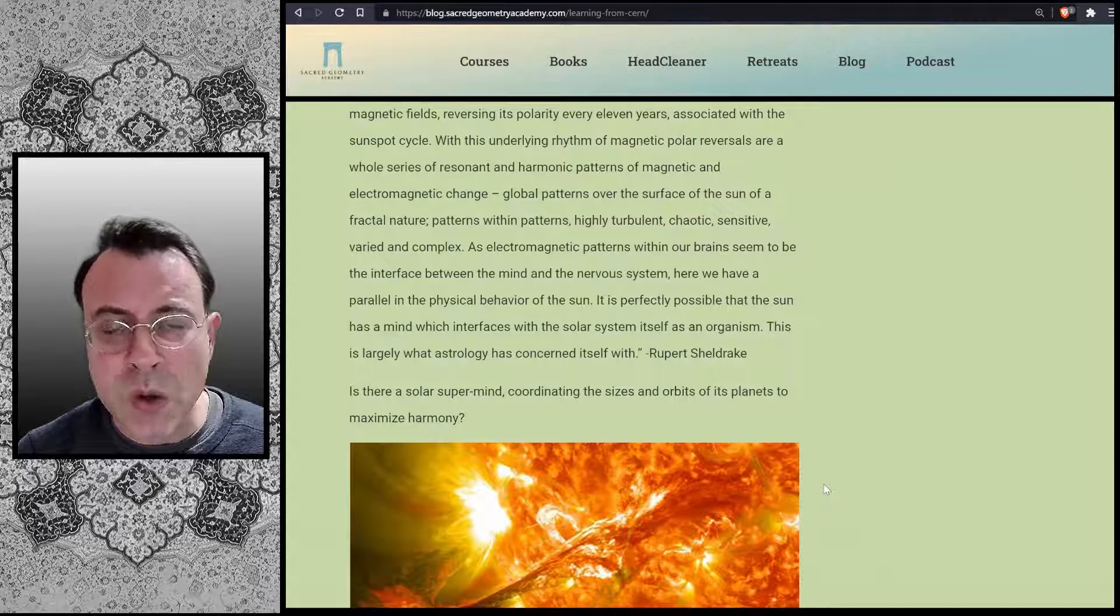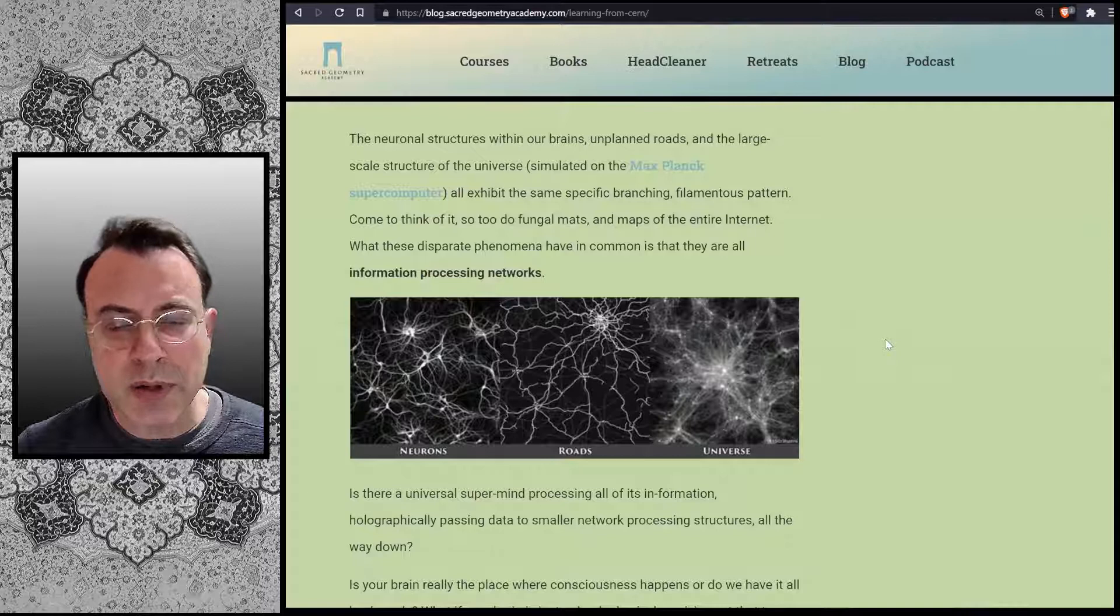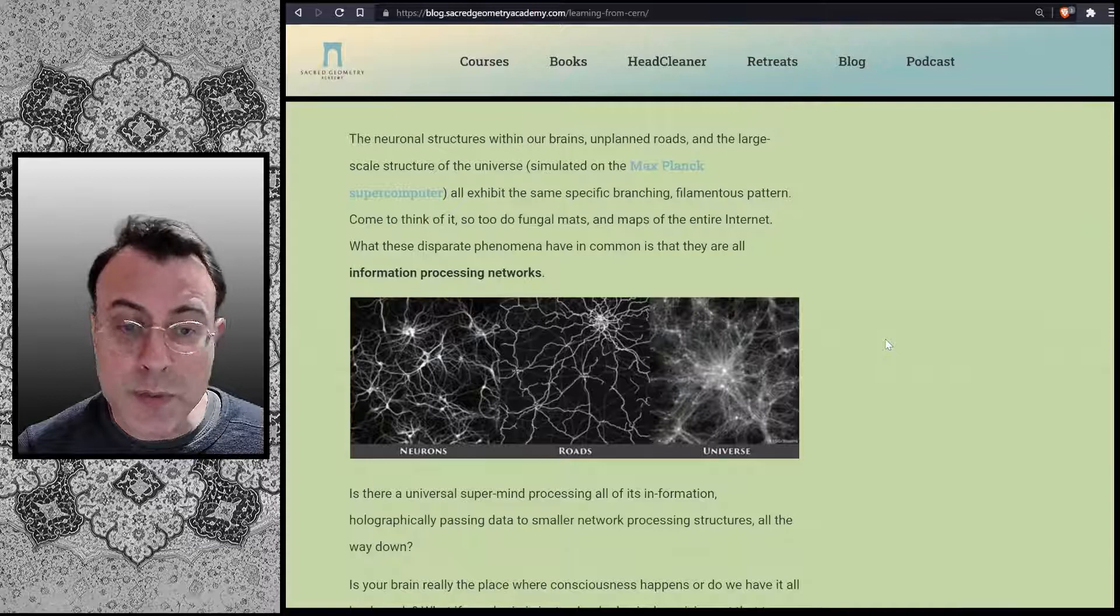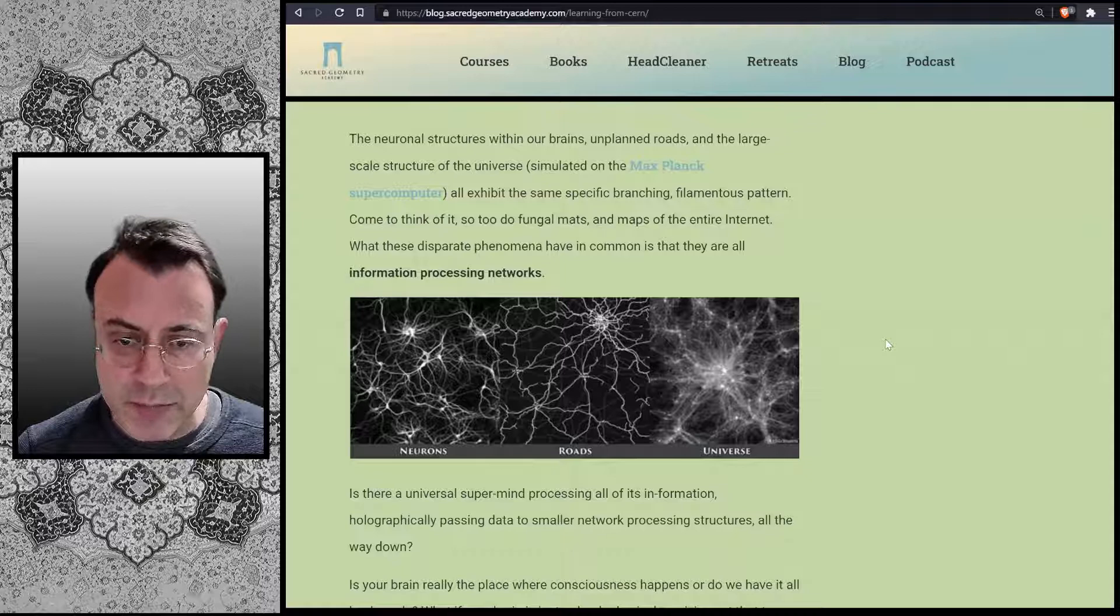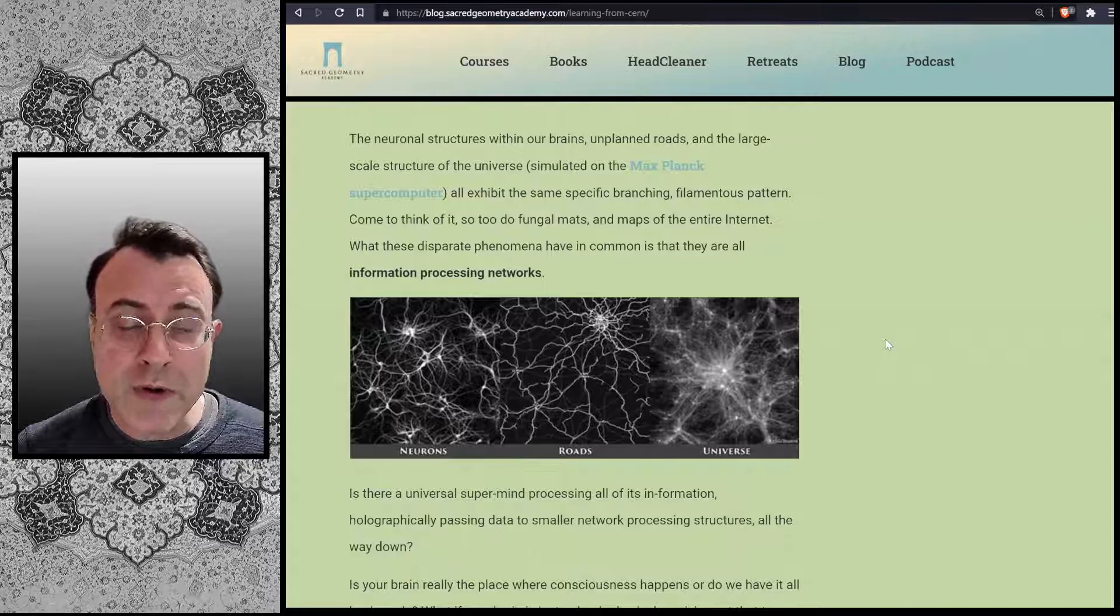Is there a solar supermind coordinating the sizes and orbits of its planets to maximize harmony? The neuronal structures within our brains, unplanned roads, and the large-scale structure of the universe, simulated on the Max-Planck supercomputer, all exhibit the same specific branching filamentous pattern. Come to think of it, so do fungal maps and maps of the entire internet. What these disparate phenomena have in common is that they are all information processing networks.